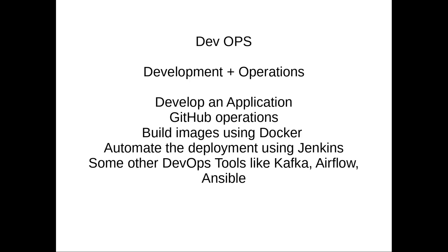If you fix the issues, you go to Git, then to the staging environment. First we test the development environment, then in the testing environment the operations team deploys. Staging is a production-like environment — we test there for errors, fix them, and then go to production environment. Waterfall model works like this.